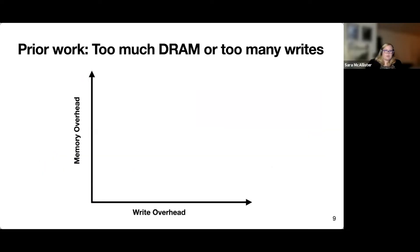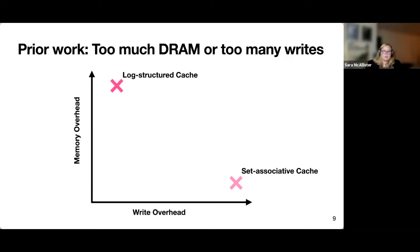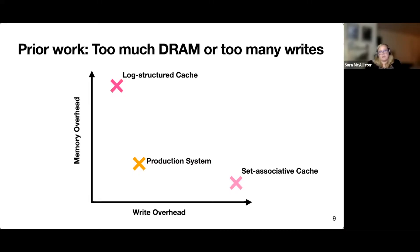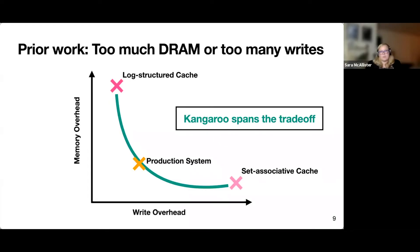Looking at prior work as a whole, we have two main concerns: memory overhead on the y-axis and write overhead on the x-axis. A log-structured cache has high memory overhead because it must keep its index, but low write overhead, whereas a set-associative cache is the opposite. For a production system, neither really works because we want both low write overhead and low memory overhead. We need some system to reach that target, and that's where Kangaroo comes in — it spans the trade-off and allows us to meet production constraints.